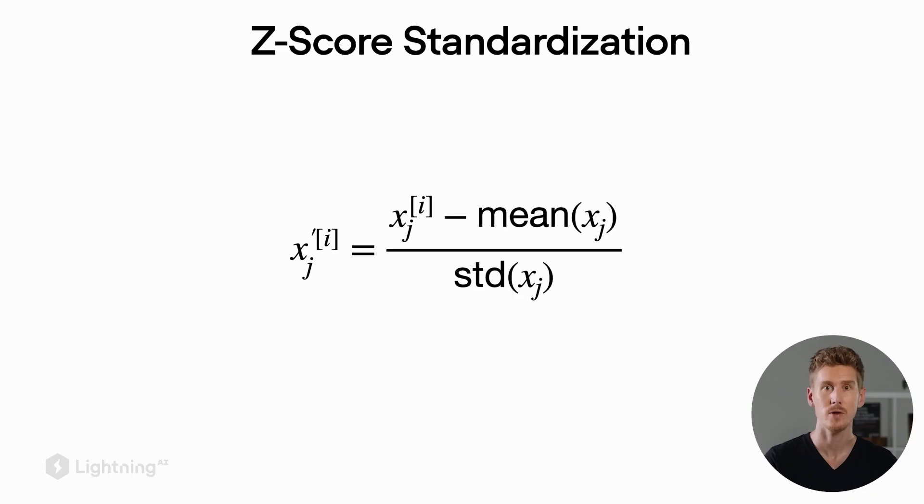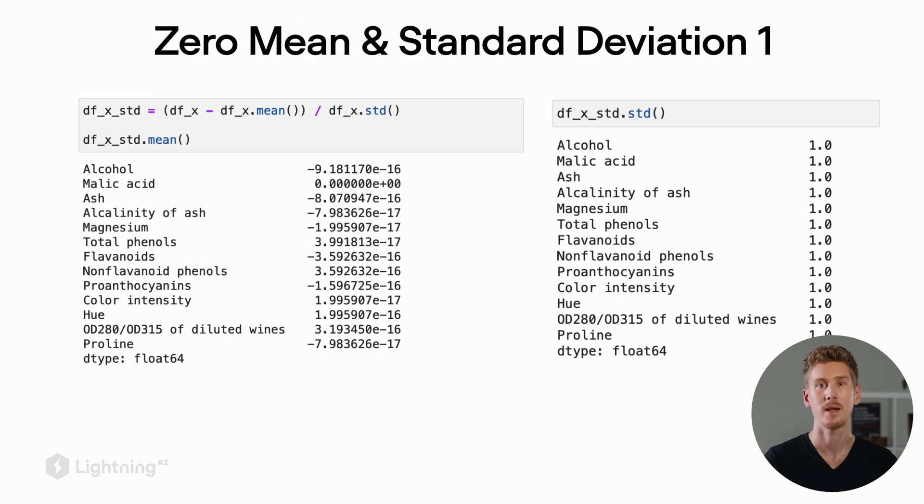So zero-one normalization is only one of the two common normalization schemes. Another, maybe even more popular normalization scheme is z-score standardization. Here again, xj represents a feature value of the ith training example. In this case, what we do is we subtract the mean of the feature column and divide by the standard deviation of this feature column.